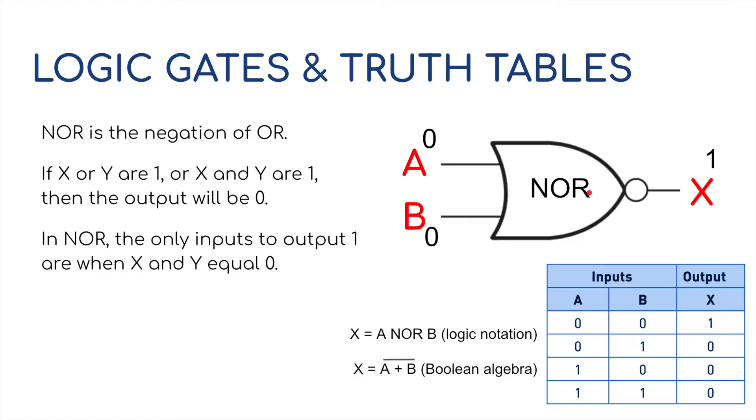Now, the opposite of the OR gate is the NOR gate, and as I mentioned for the first one, the NOT gate, it has one of these little round things on the front of it, and that means NOT, so NOT OR. NOR is a negation of the OR. So if X or Y are 1, and X and Y are 1, then the output will be 0. In NOR, the only input to output 1 are when both X and Y equals 0, and you can see that here. So 0, 0 equals 1. The rest of them would lead to a 0 output. Logic notation, A NOR B, but here we've got, same as an OR gate, A plus B, but it's NOT OR, so it has the line over the top of it like this. That's a Boolean algebra expression.